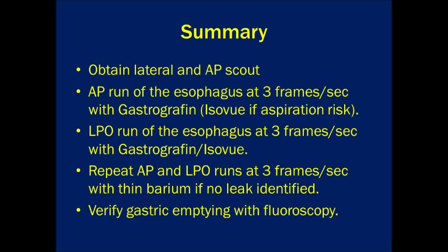Next, look with fluoroscopy — meaning no actual exposures — to verify gastric emptying. For a quick review of the steps: first, obtain lateral and AP scout images; second, do an AP run of the esophagus at 3 frames per second with gastrographin, substituting ISO view if the patient is felt to be an aspiration risk; third, do an LPO run at 3 frames per second; fourth, repeat AP and LPO runs with thin barium if no leak has been identified; and fifth, verify gastric emptying using fluoroscopy.